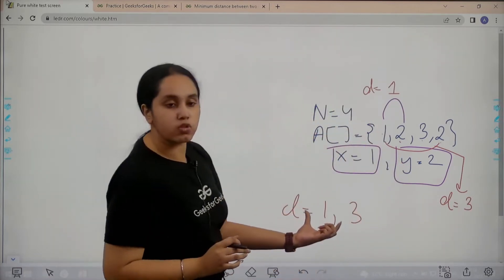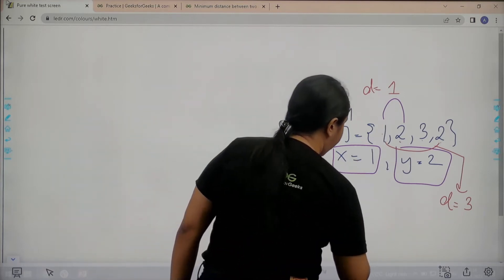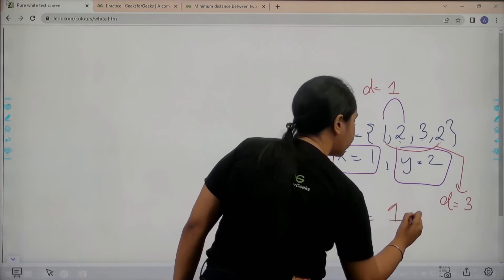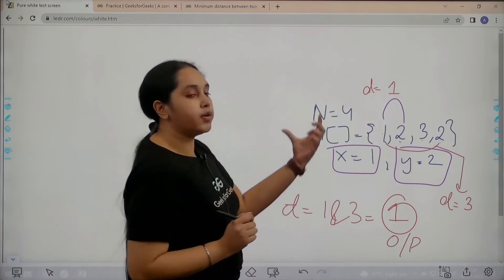Among these two values I need to print the minimum value. Between 1 and 3, the minimum value is 1, so my output for this array is 1. I hope the concept is clear to you. Now let's move forward to the solution.